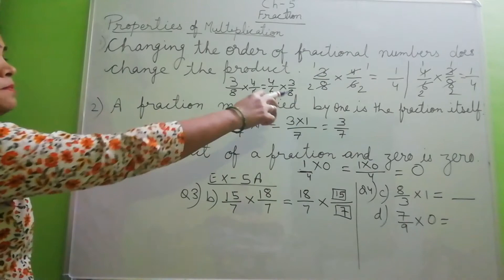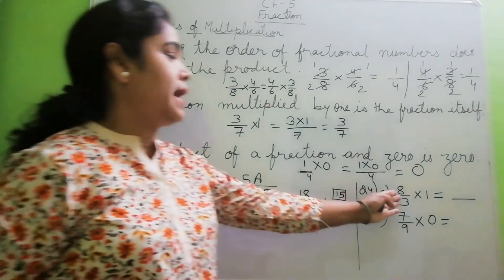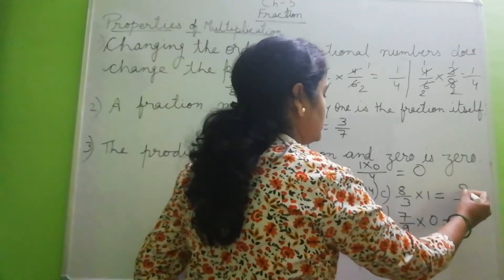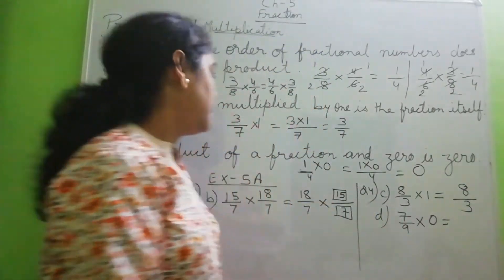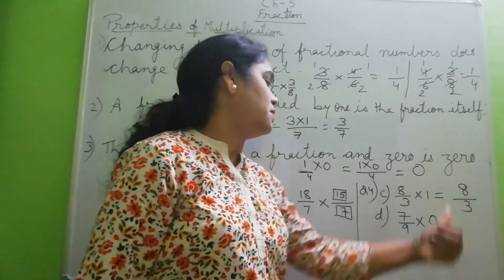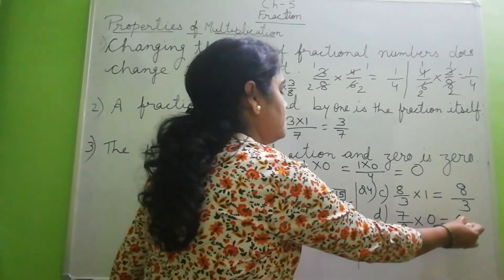The fraction multiplied by 1 is the fraction itself. So, multiplied... this is a fraction, it is multiplied by 1. So it is fraction itself. And the product of a fraction and 0 is 0. So you can write 7 by 9 into 0 is equal to 0.